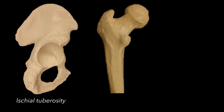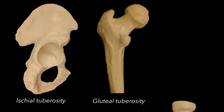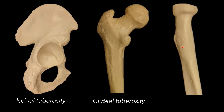For example, on the part of the hip bone called the ischium, there is the ischial tuberosity. On the back of the femur, this large roughened surface where some butt muscles are attaching is the gluteal tuberosity. And on the radius, this would be the radial tuberosity.